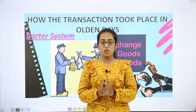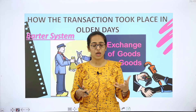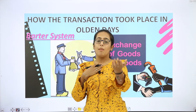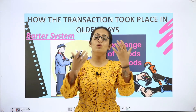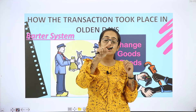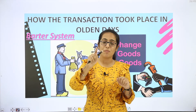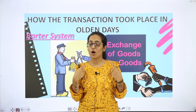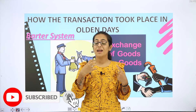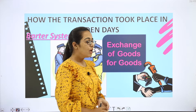Double coincidence of wants is very important in the barter system. Whatever cheese — item — I have, the other person must actually need it, and the item that I need must actually be with that other person. Both sides must coincide. You have to search for such a person, which was the challenge of this system.